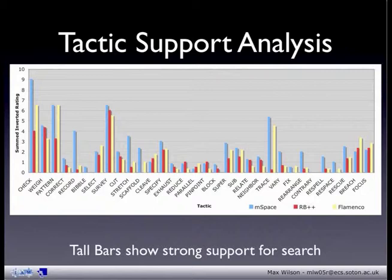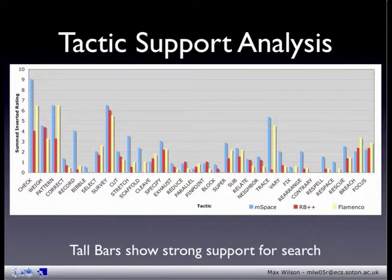The final thing you can draw from this graph are areas for general improvement. There is a set of tactics in the middle of the graph which are largely unsupported by any of the browsers, yet the majority of tactics that are supported well relates to the facets and the user's current selections. So we have now used Bates' tactics to measure in what ways people seek information, and then Bates' moves to measure in what ways browsers let users do these things.